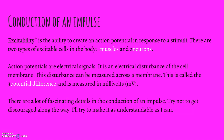Excitability is the ability to create an action potential in response to a stimuli. We have two types of excitable cells in the human body—muscles and neurons. Action potentials are electrical signals; it's an electrical disturbance of the cell membrane. This disturbance is measured across the membrane, and it's called the potential difference, and we can measure that in millivolts. There's a lot of fascinating details in the conduction of an impulse—try really hard not to get discouraged, pause when you need to.